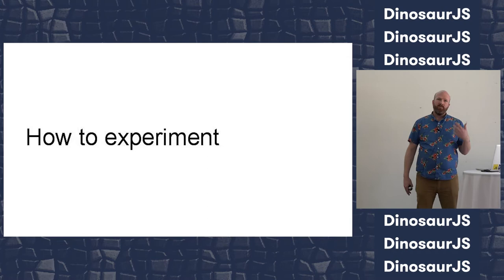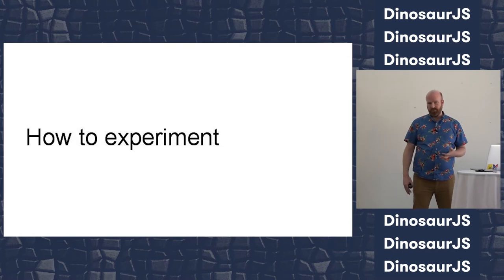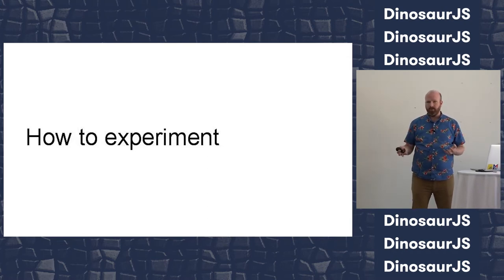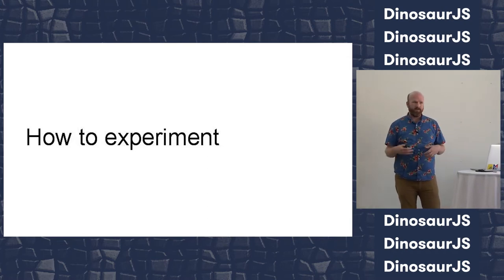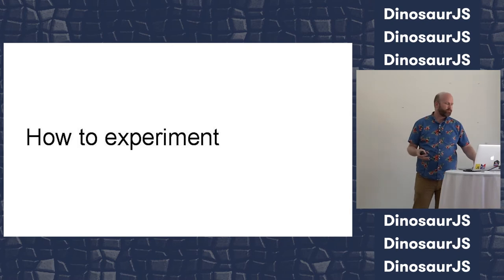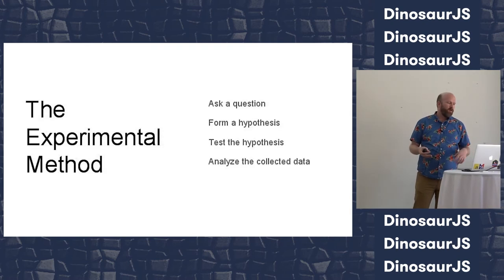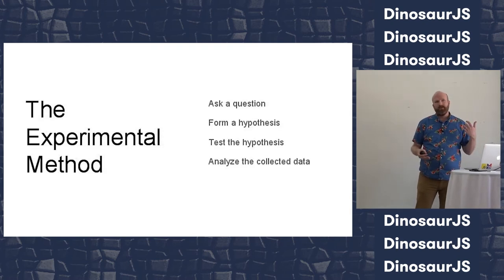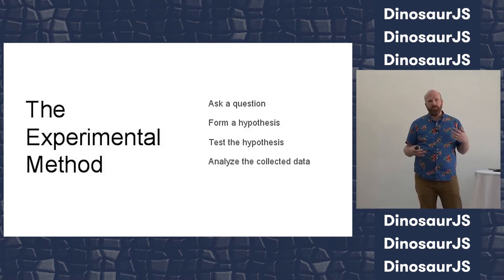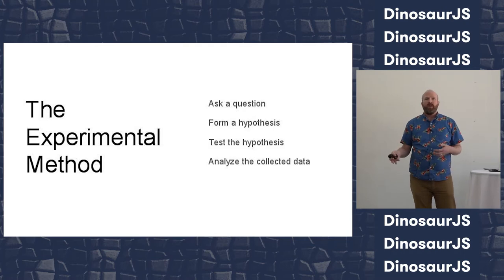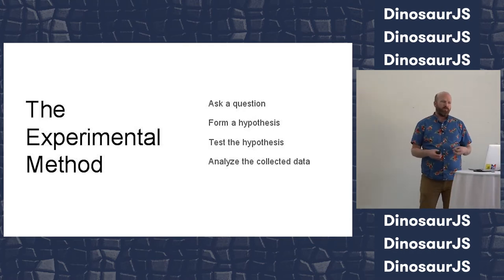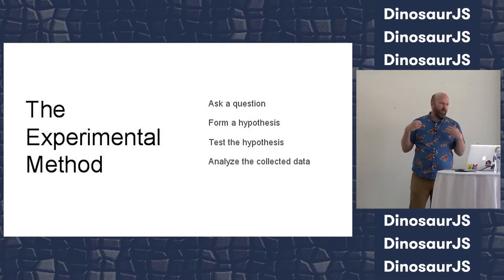Before we get to an actual experiment, let's cover the rigorous part — how do we do an experiment? You may remember this from high school or middle school: it's the scientific method. You have a question — does gravity affect two objects that weigh different amounts in differing ways?